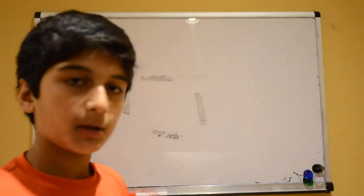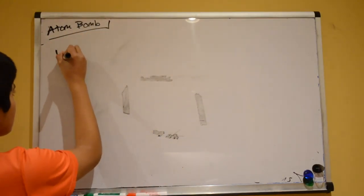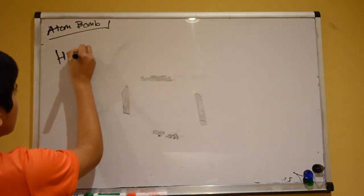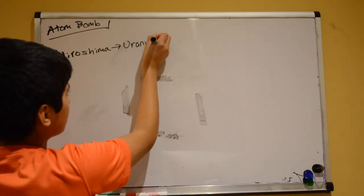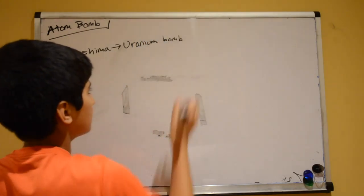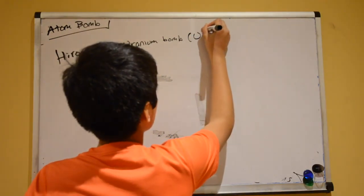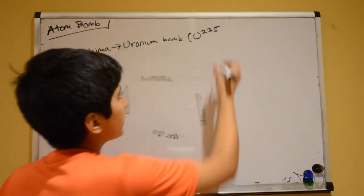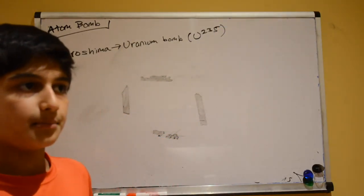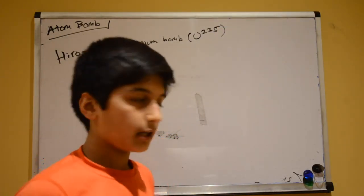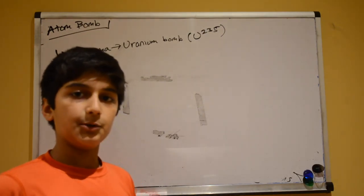So the one that was dropped on Hiroshima was a uranium bomb. It utilized an isotope of uranium called U-235. So instead of having the normal 238 protons and neutrons, electrons, it had 235. This was a rare isotope but it did more explosive damage than U-238.